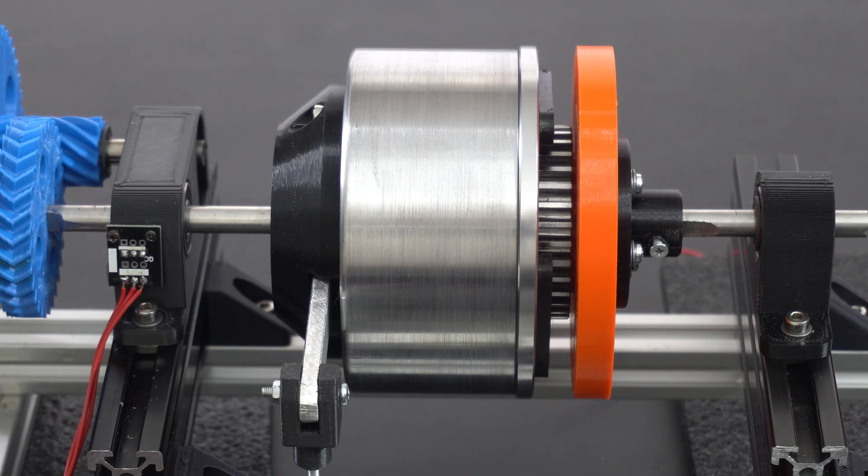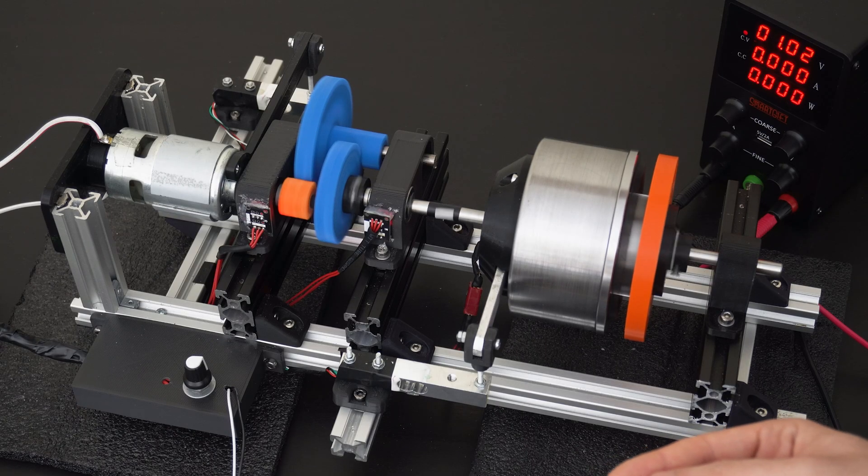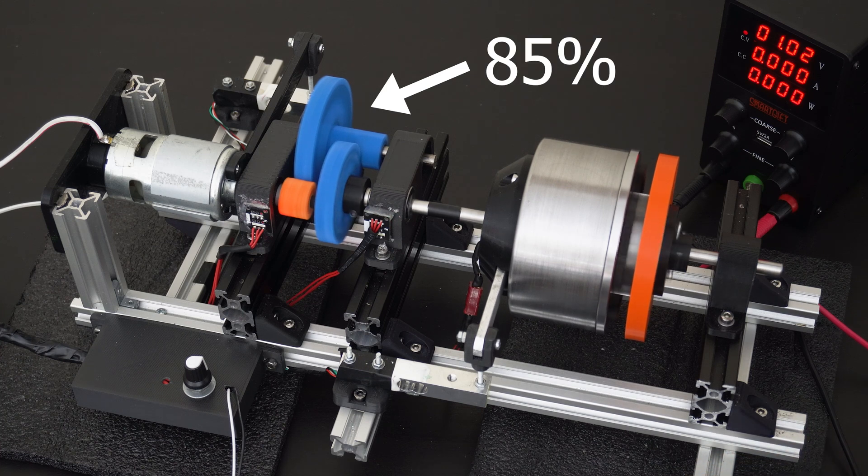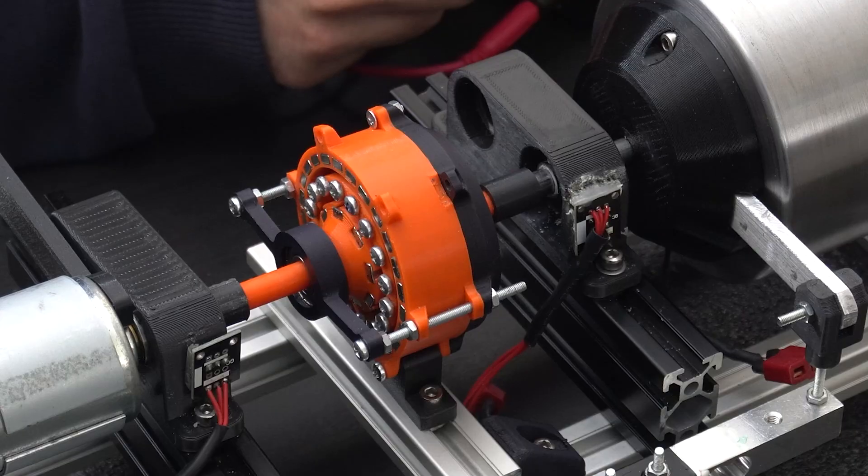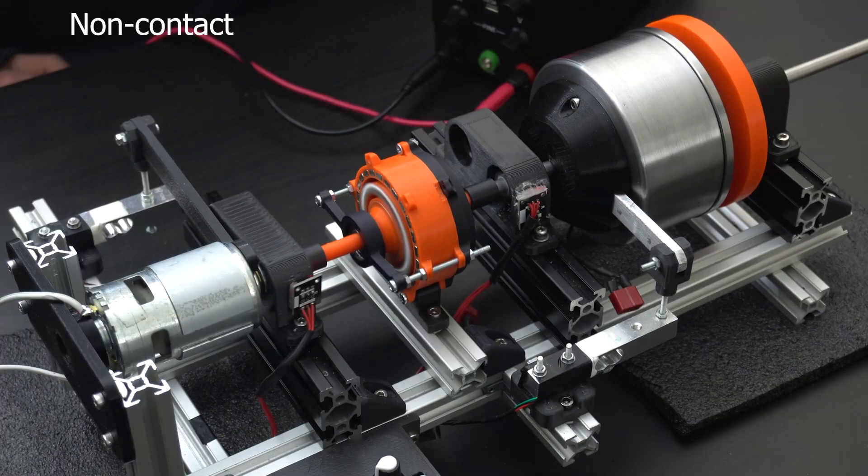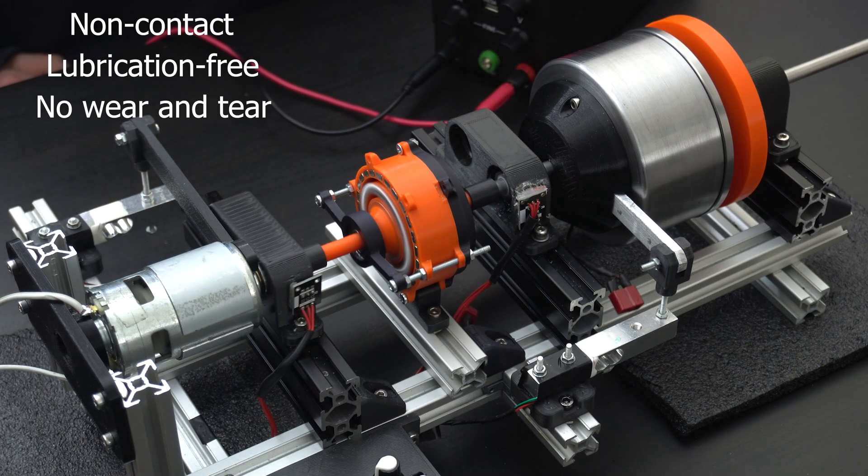Previously, using this electromagnetic brake, I found the efficiency of mechanical gears, specifically these 3D printed herringbone gears, to be around 85%. I then tested this radial flux magnetic gearbox, which is a non-contact, lubrication-free, no-wear gearbox.